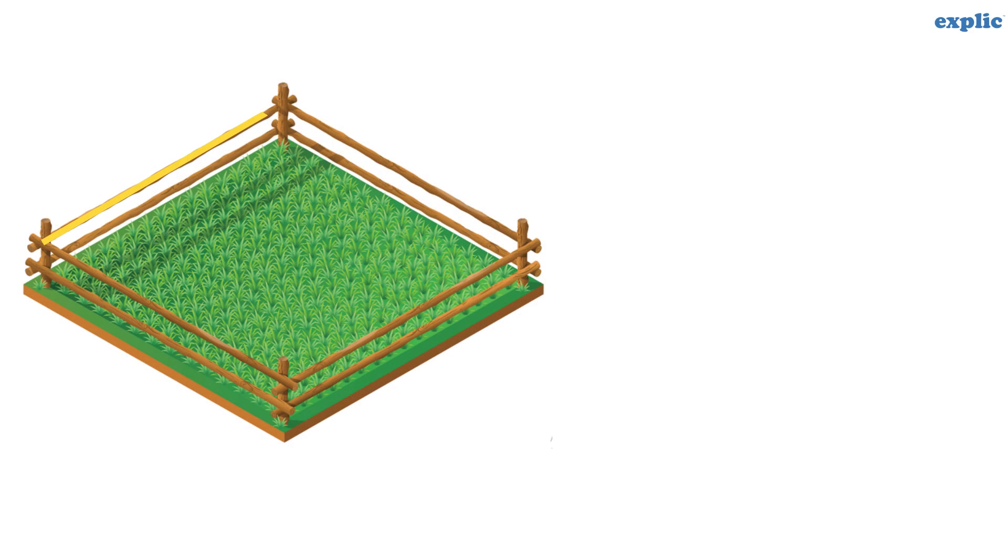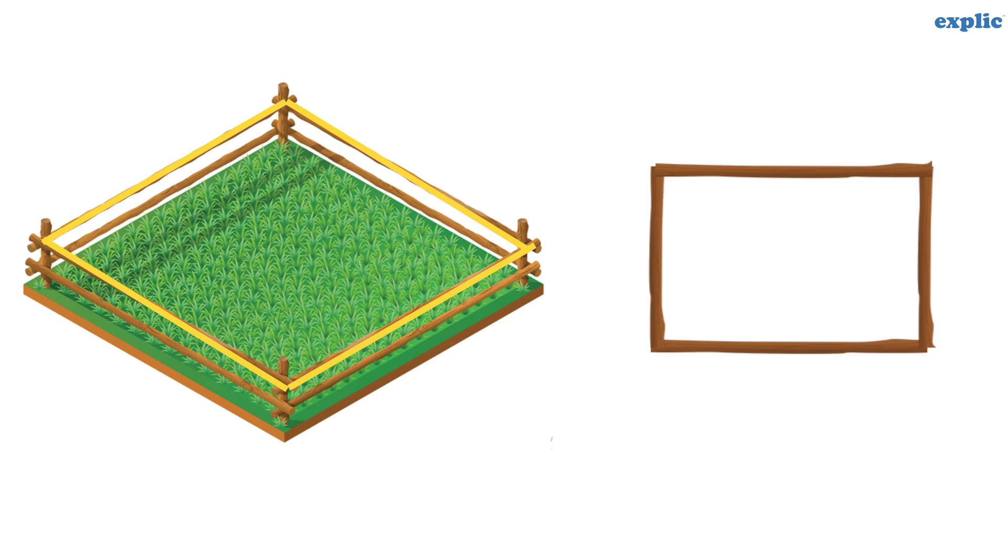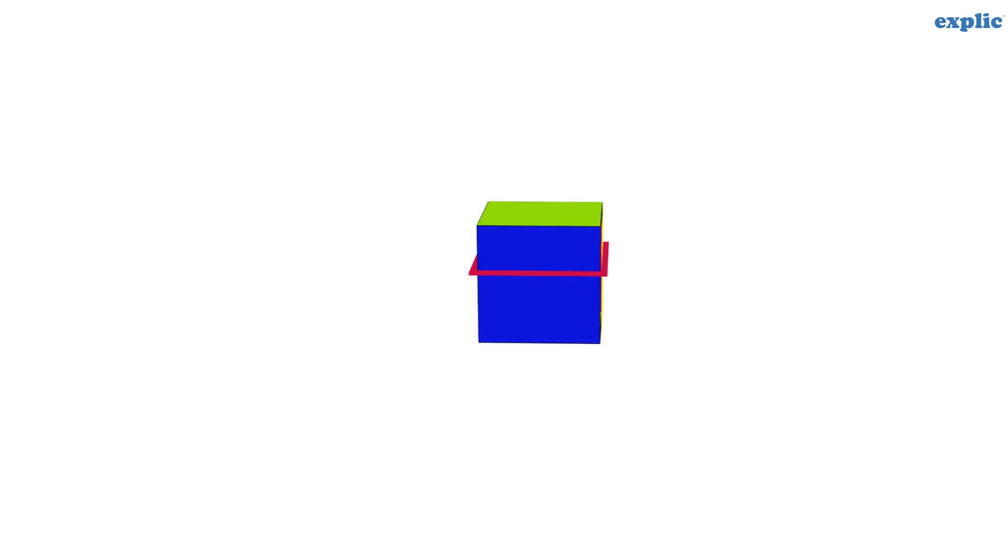Considering the example of a fenced pasture, the length of the fencing is the perimeter. The length of the tape around a box is the perimeter of the box.